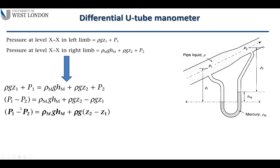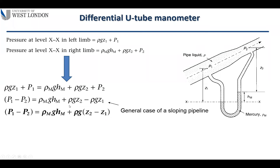Rearranging to find P1 minus P2, we move all other terms to the right-hand side. We can factor rho*g from the elevation terms, giving rho*g*(z2 minus z1) as one term. This is the general case for a sloping pipeline.